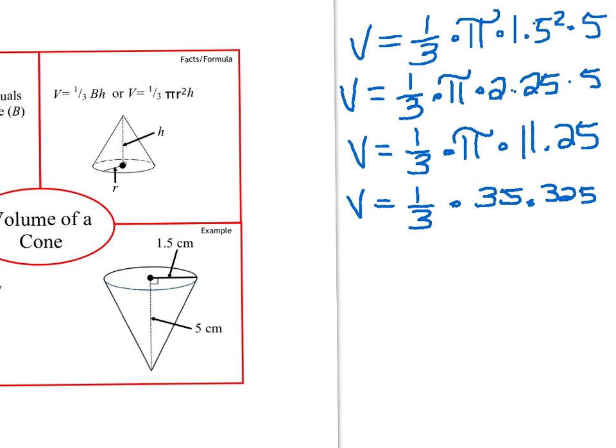And the last thing I'm going to do is multiply that number by one-third, or it would be the equivalent of dividing by 3. And when I do that, I get 11.775.